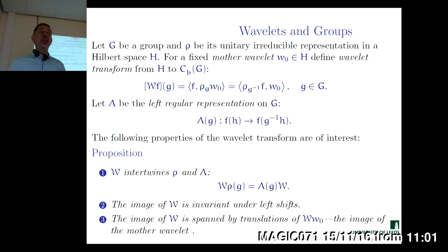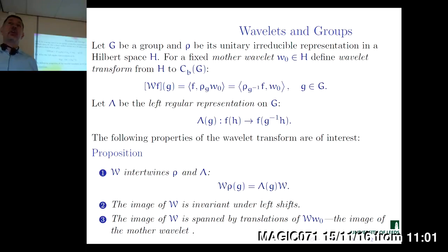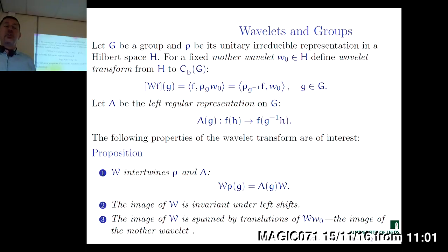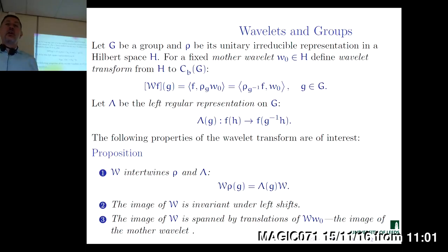Irreducibility is an important condition. It means that there are no closed invariant subspaces in H under that group action, because otherwise we may decompose our representation into components and restrict it to those invariant subspaces. This is similar to what we did when we considered the action of a group on a certain space, where orbits under transitive group action form a decomposition into disjoint union of homogeneous spaces.